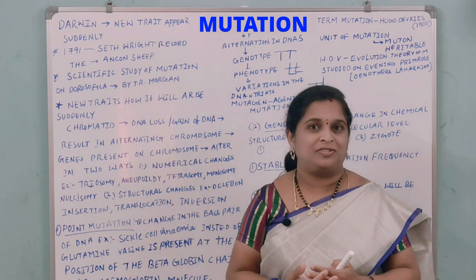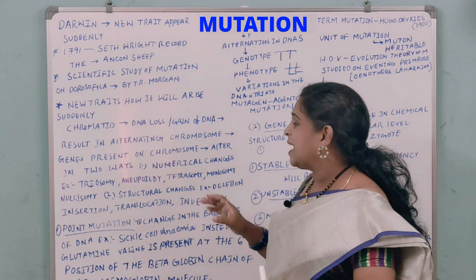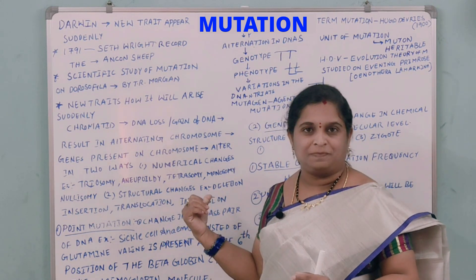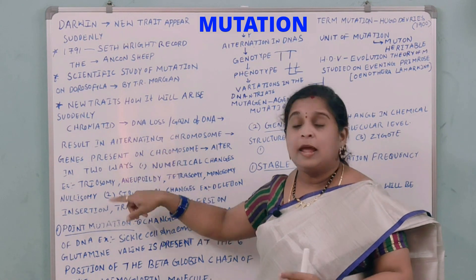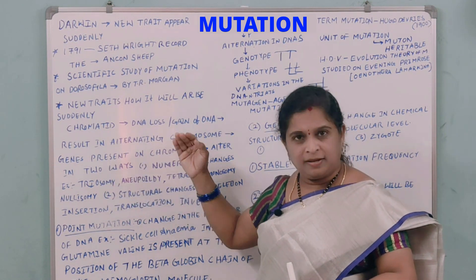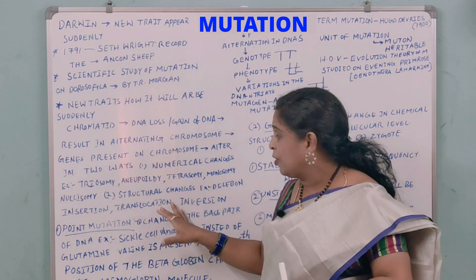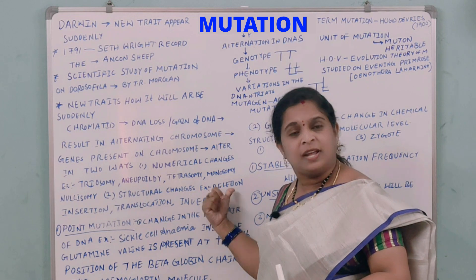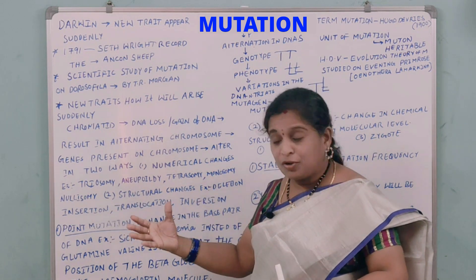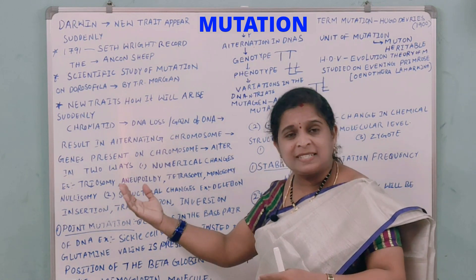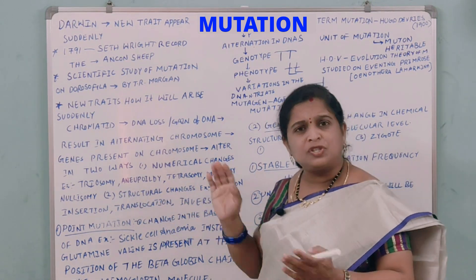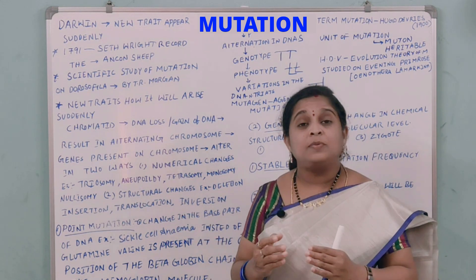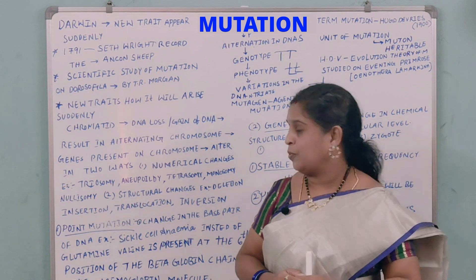Structural changes include deletion — removal of a segment — insertion — adding of a segment — translocation — taking out and placing a segment at another point — and inversion — a total reversal. That is how total alteration in the DNA takes place.